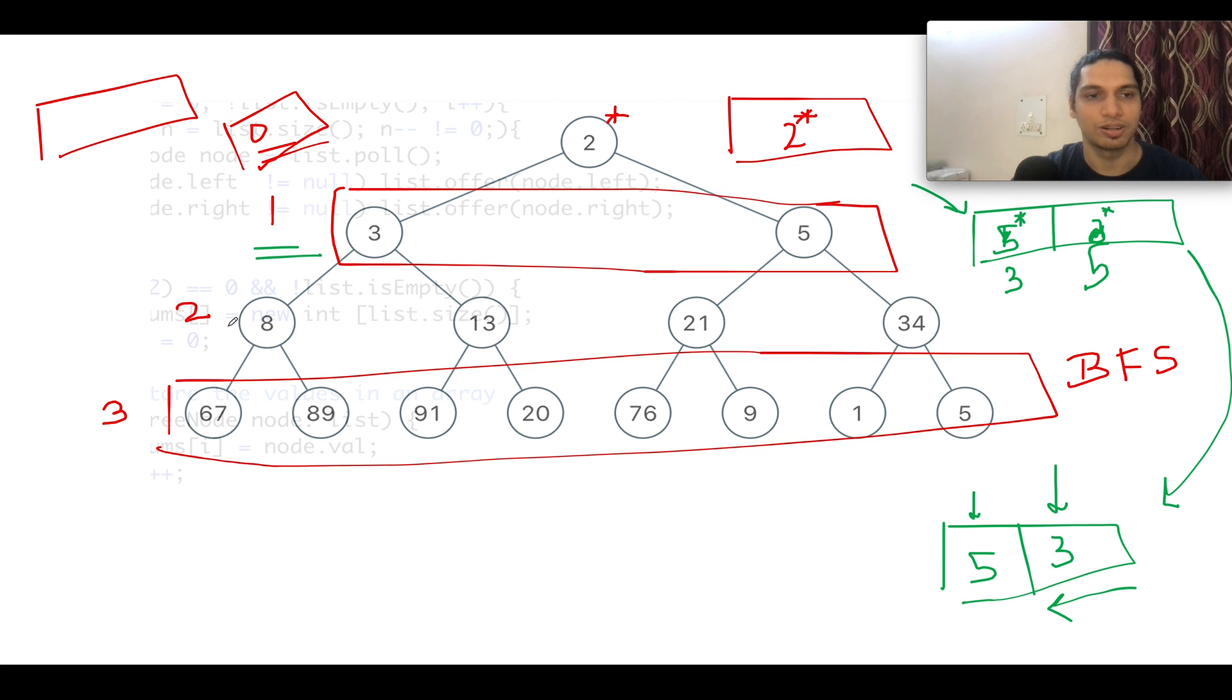The next level that we have happens to be 2. Since it's even in nature, we will not be doing anything extra. The last level that we have happens to be 3, which is odd in nature. Since it's odd in nature, we will perform the reversal operation. In the first go, we will be storing the node references. Let's write it up because it's a long array. The first node is 67, so let's write 67, and let me just write asterisk over here that represents those are node references.